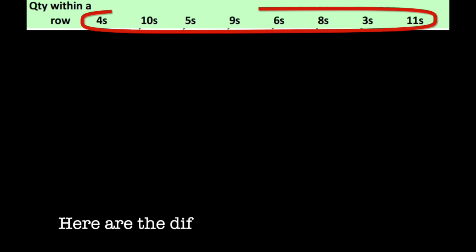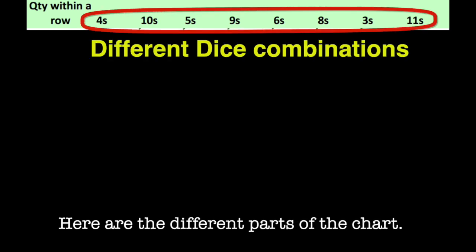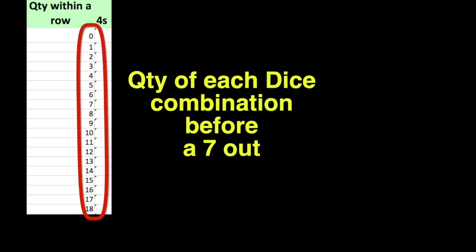Here are the different parts of the chart, different dice combinations, quantity of each dice combination before a seven out.